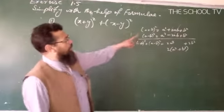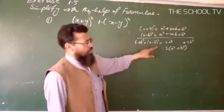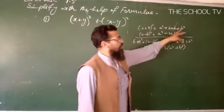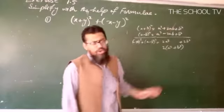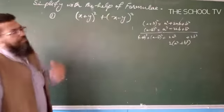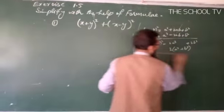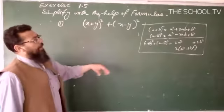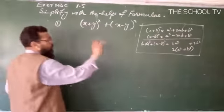And if instead we subtract — (a + b)² minus (a - b)² — then the a² terms cancel, the b² terms cancel, and 2ab + 2ab gives us 4ab. So that is another formula we get.